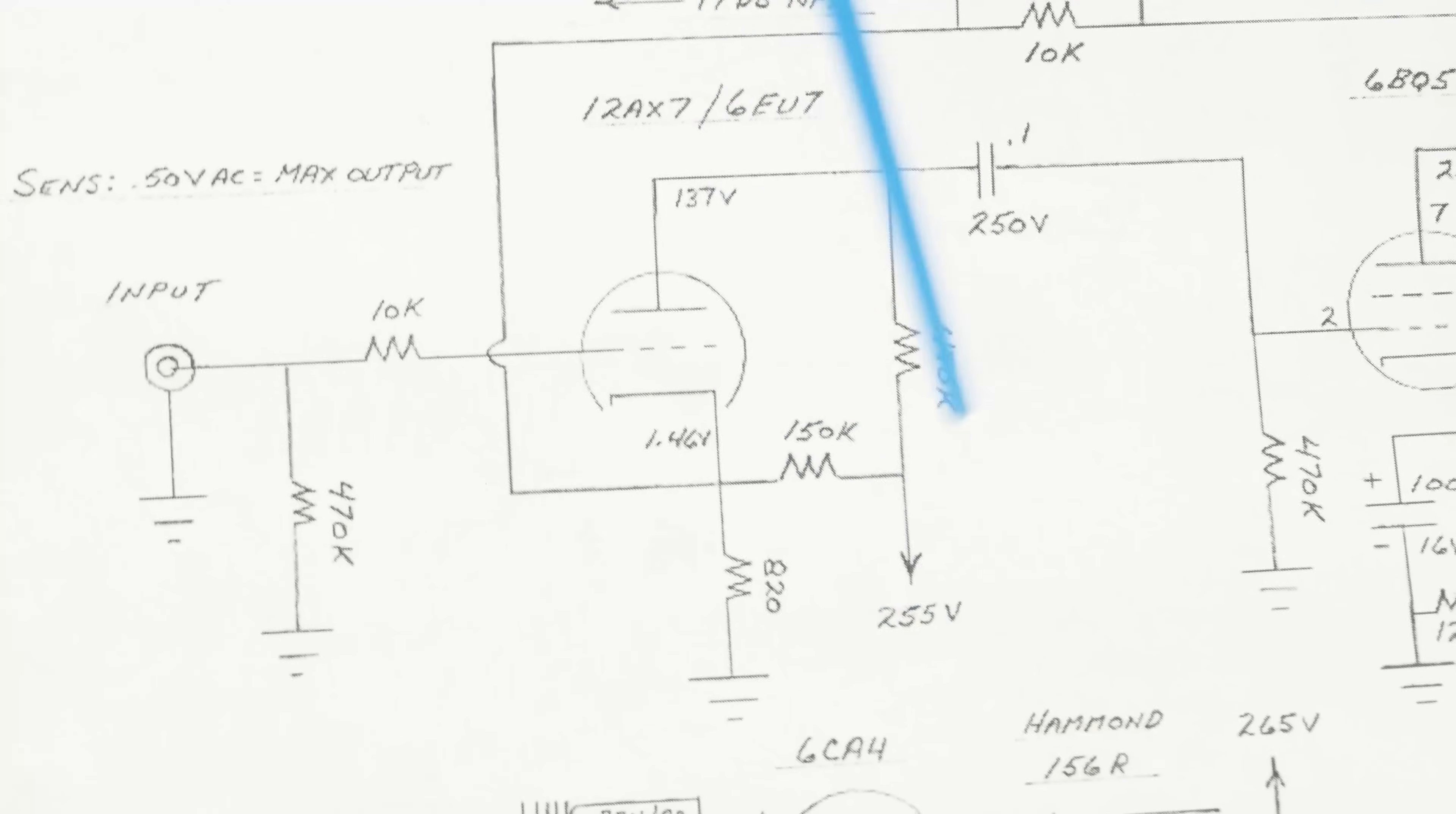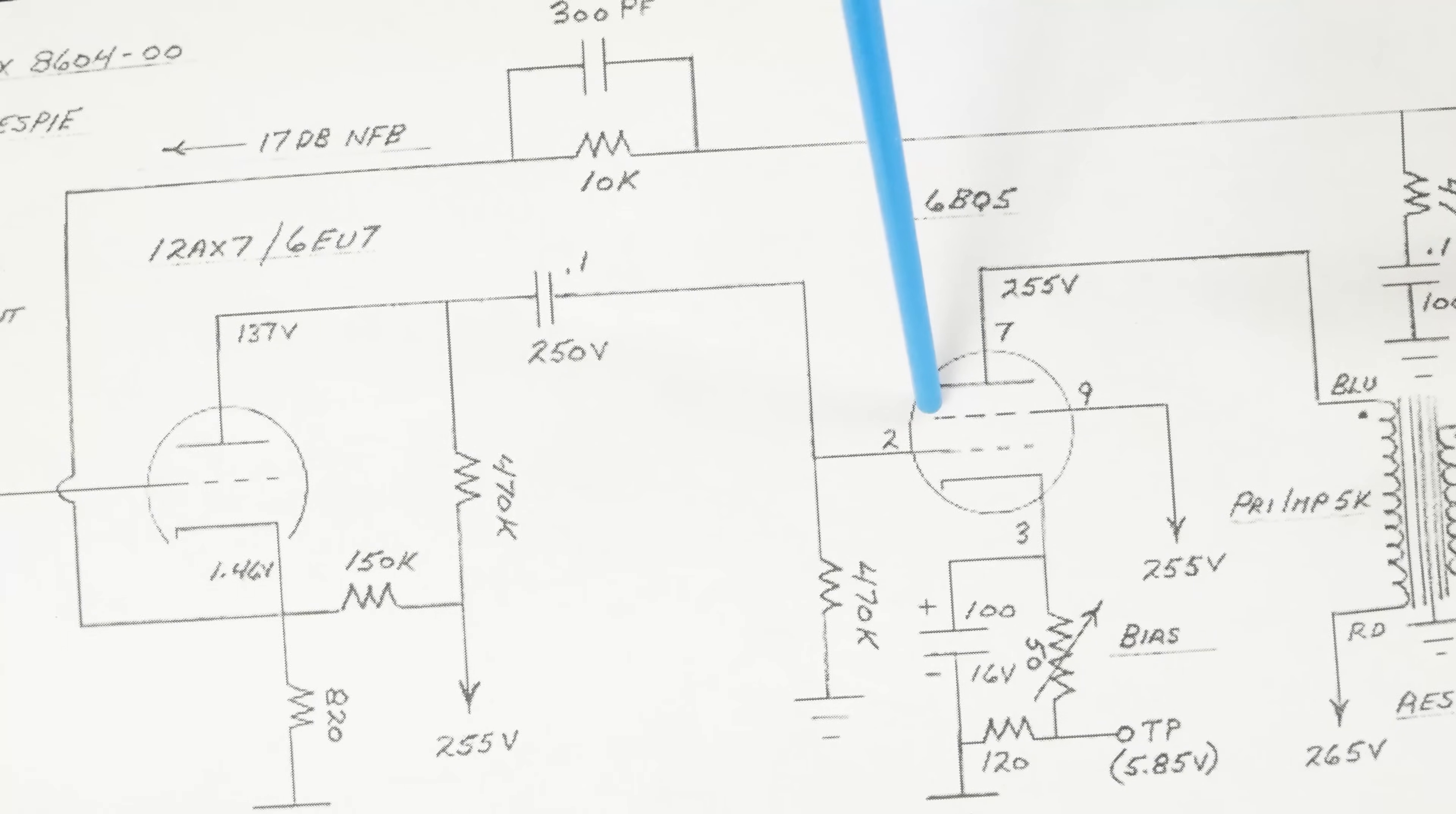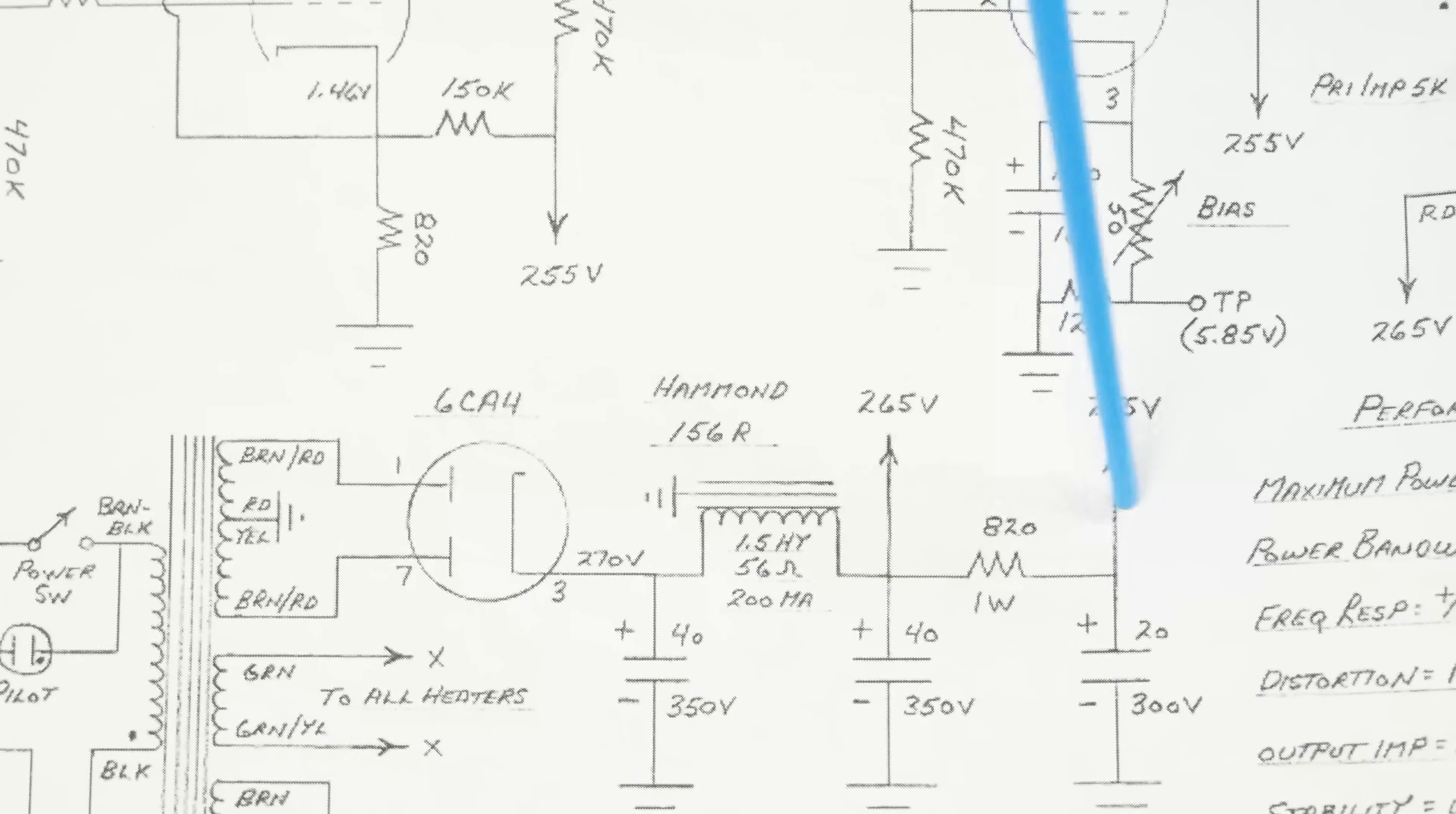So we're going to wire this stuff up, and over here on this side, we've installed the output transformer, and we've run this wire up here to the plate of the output tube. Then we're going to be connecting this screen to this point in the power supply down here to get our 255 volts on the screen.